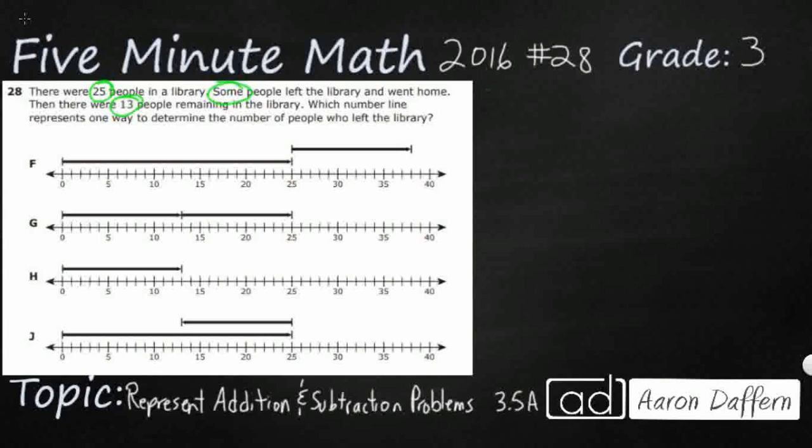But how do we represent that? Well, let's see what we have. We've got 25 people. Some went away. We don't know how many that is. And that leaves us with 13. Well, there's a few different ways we can solve this.